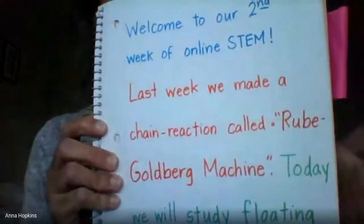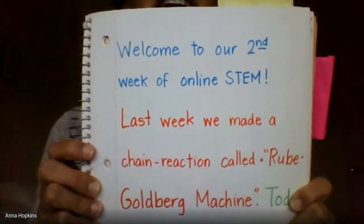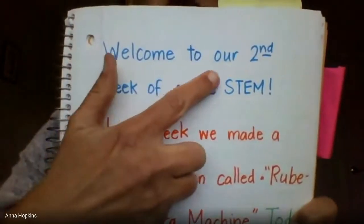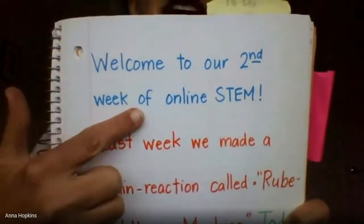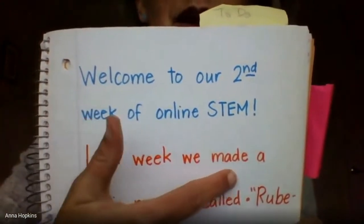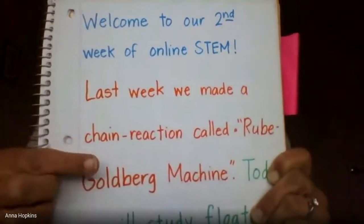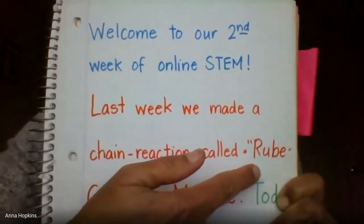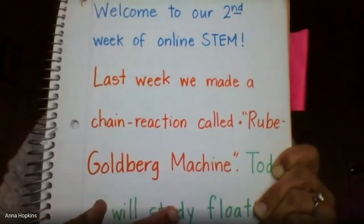The next thing we would usually do in class is read the message of the day. So here is my message for you today. Welcome to our second week of online STEM. Last week, we made a chain reaction contraption called a Rube Goldberg machine.